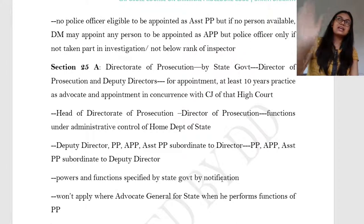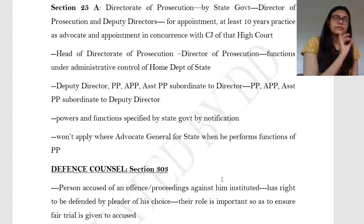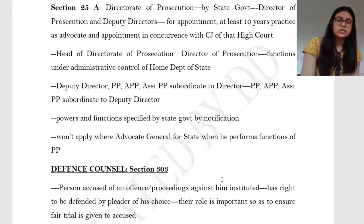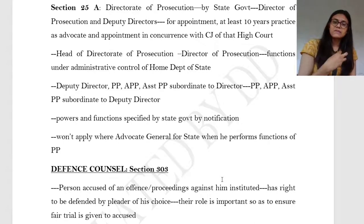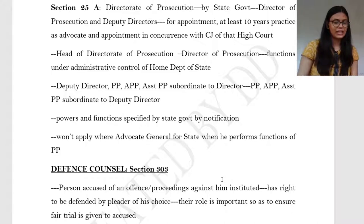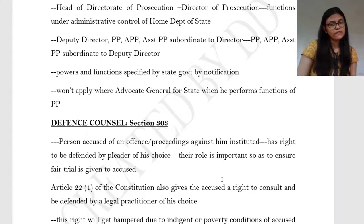Now let's see the third counsel — the defense counsel, dealt under Section 303. A person who has been accused or against whom proceedings have been instituted has a right to be defended by a pleader of choice. This is important because without representation from his side there would not be a fair trial. Fair trial is important for natural justice, and Article 22(1) of the Constitution also gives him that right, as does Section 303.